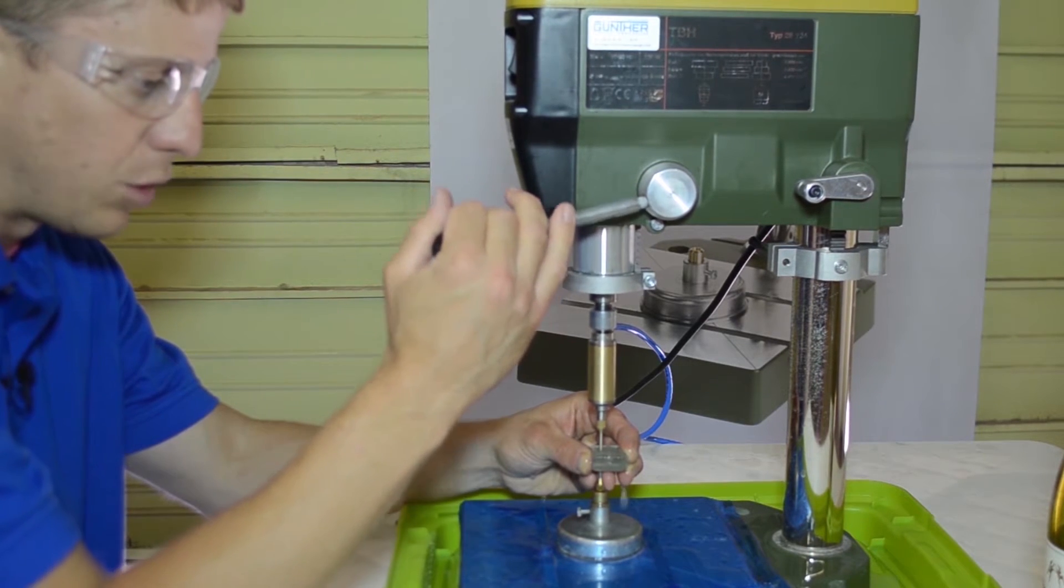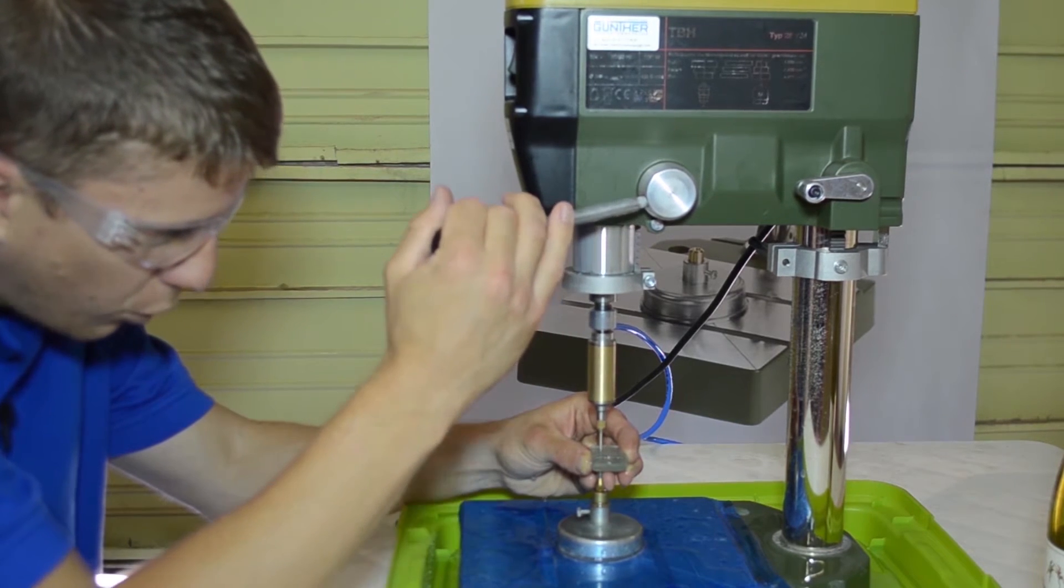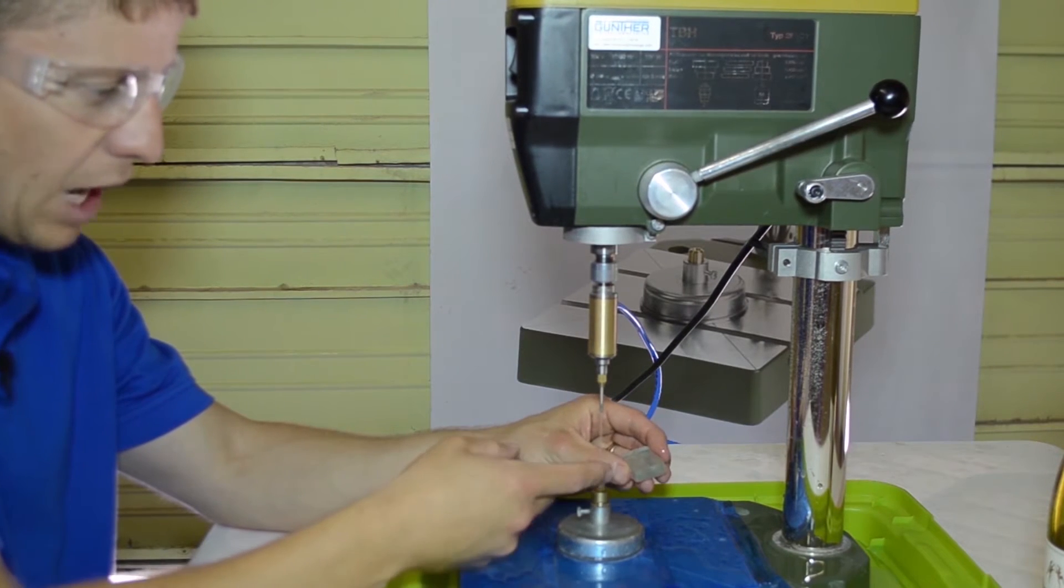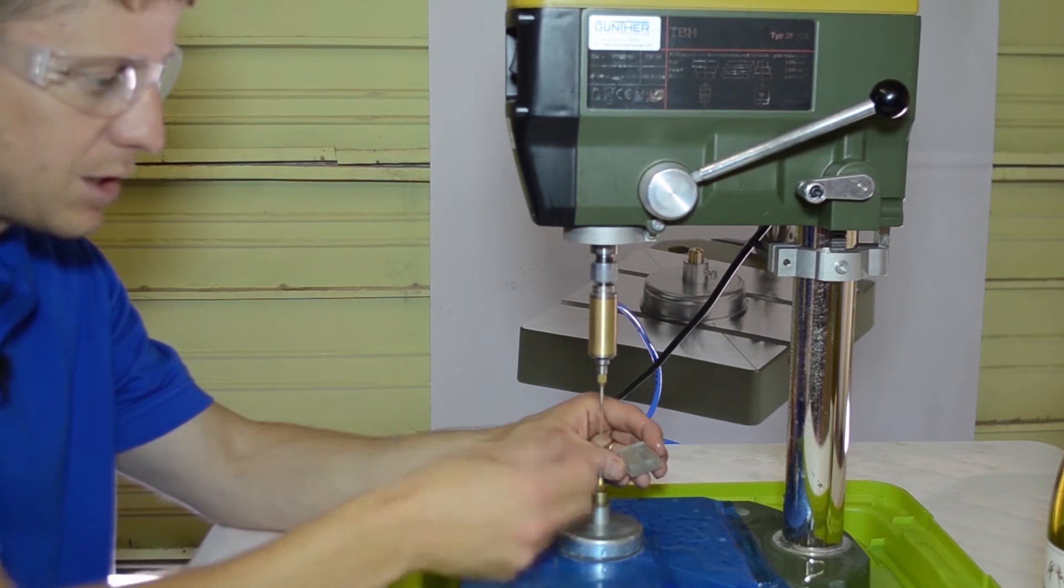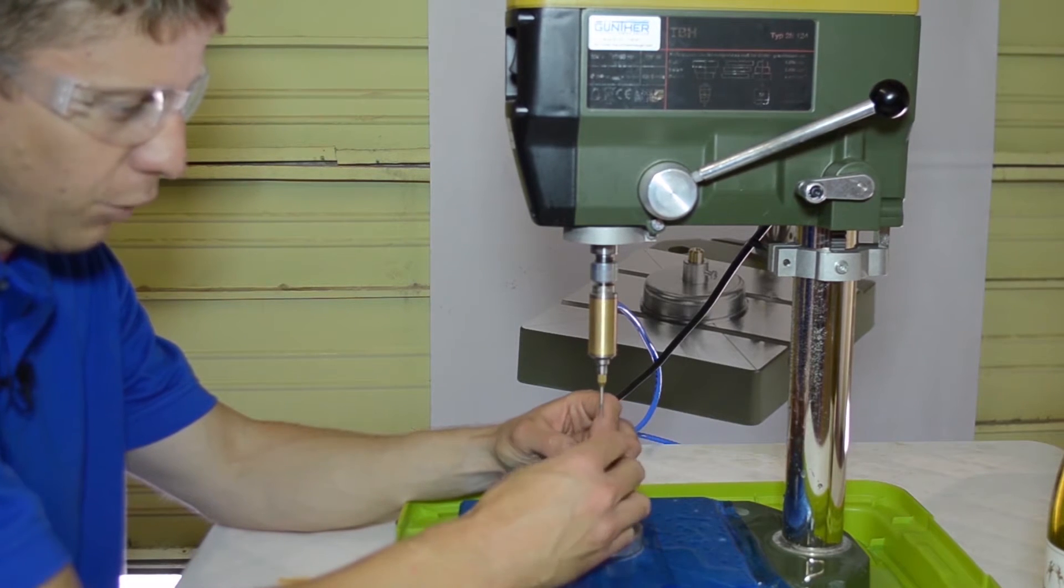So I drill about halfway through. The diameter of the counterpart is the same diameter as the drill press so I take that starter hole, I flip it over.